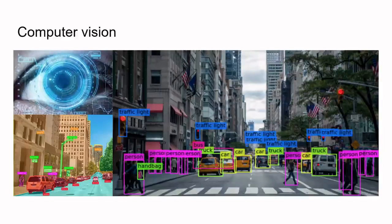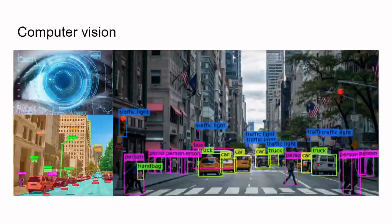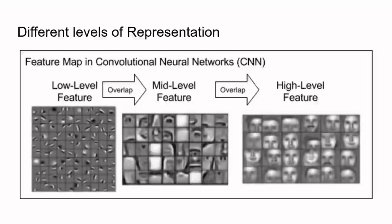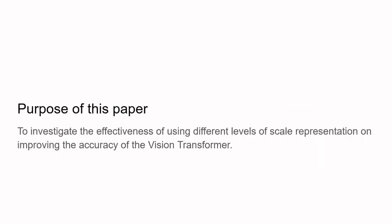In the field of computer vision, deep learning models have enabled computers to interpret, process, and understand digital images and video data from the physical world. Such deep learning methods, like a simple feed-forward network, a convolutional network, and a vision transformer, all work because of their ability to create different levels of representation in their feature maps. For instance, a convolutional network produces a wide range of features, from pixel edges to a holistic object view. The question is: what happens if you inject these different levels of information into the model explicitly? This brings us to the premise of the whole paper.